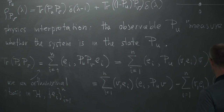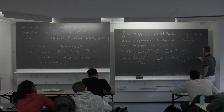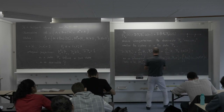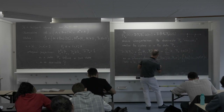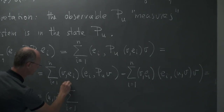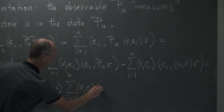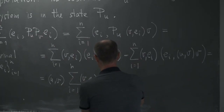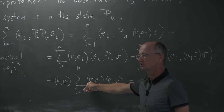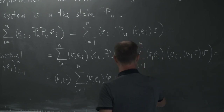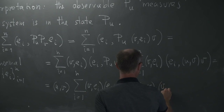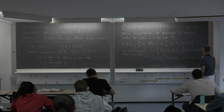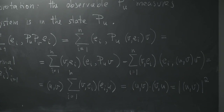Continuing the computation: this equals ⟨u, v⟩ times the sum from 1 to n of ⟨v, e_i⟩⟨e_i, u⟩. Since this is an orthonormal basis, this is just the Hermitian product ⟨v, u⟩. So we obtain ⟨u, v⟩ · ⟨v, u⟩, and by the complex conjugation property this equals |⟨u, v⟩|².